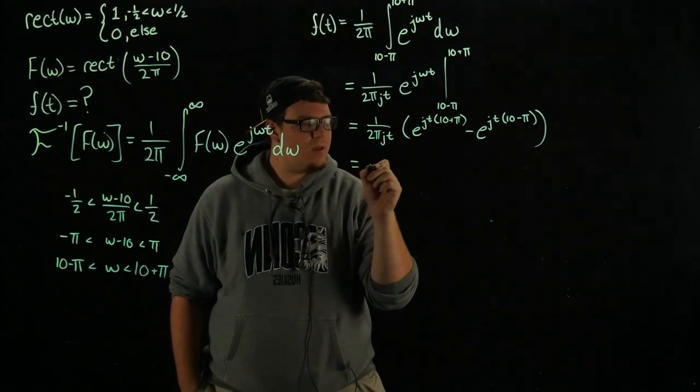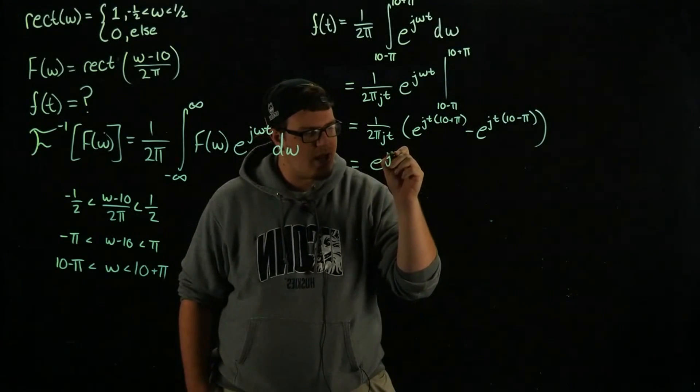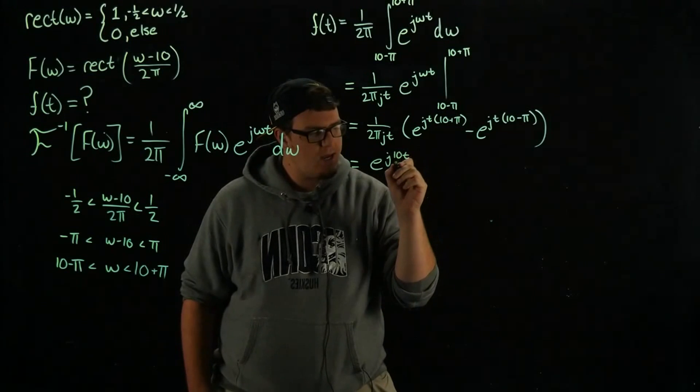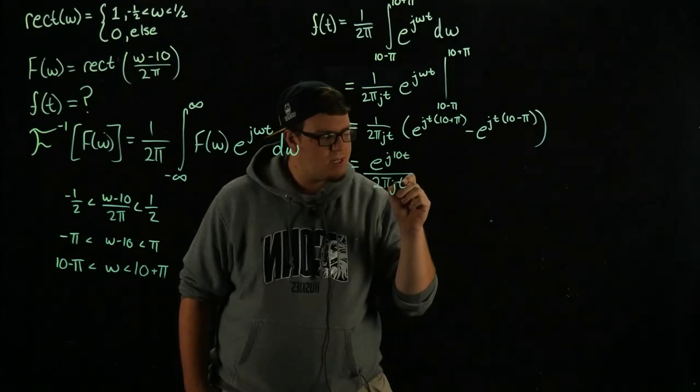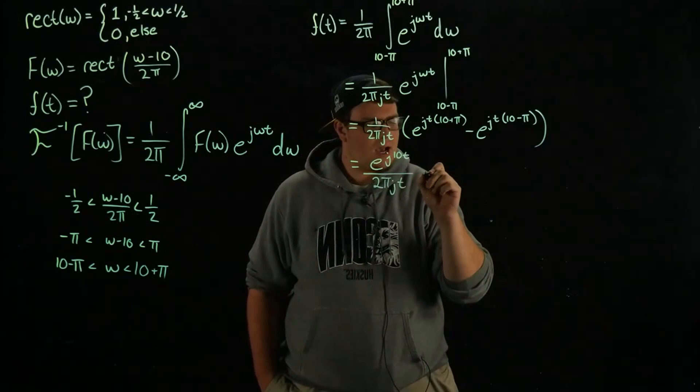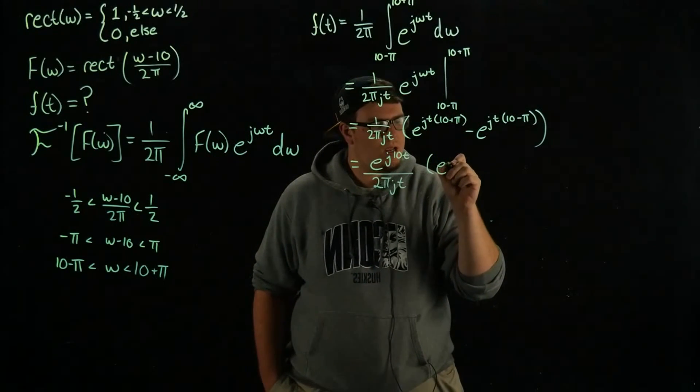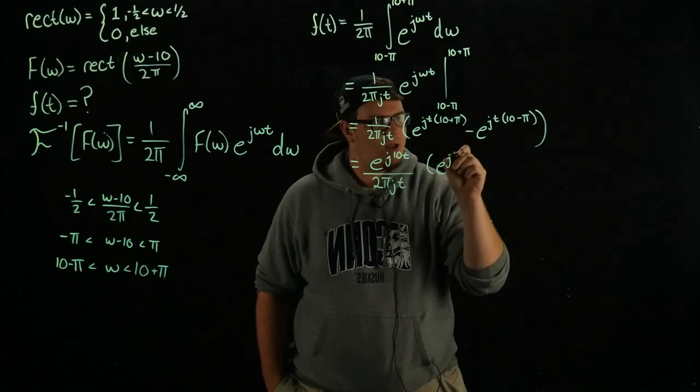If we do that we end up with e to the j 10 t divided by 2 pi j t times e to the j pi t minus e to the j negative pi t.